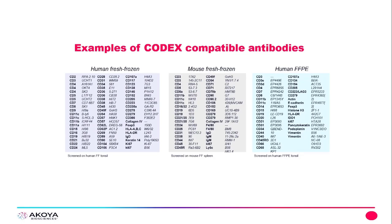Here are some examples of CODEX-compatible antibodies that Akoya has validated or screened. We have antibodies for human fresh frozen tissue, mouse fresh frozen tissue, and human FFPE tissue. These lists are ever-growing, so if you'd like to know if your antigen is on this list, please reach out to us. And if you don't see your tissue or targets listed here, please don't be discouraged — we might have some experience with that tissue, so please reach out.